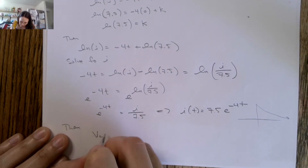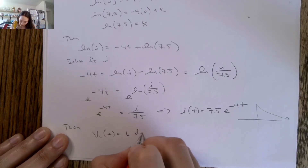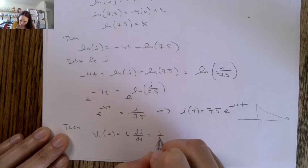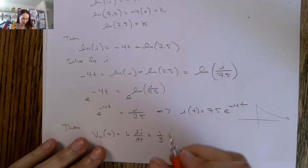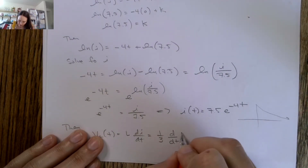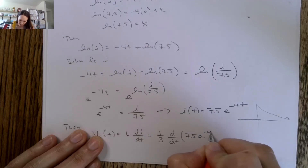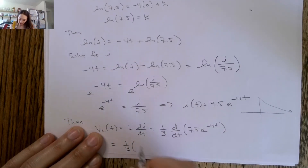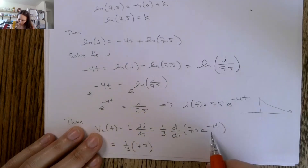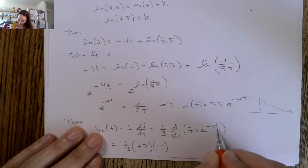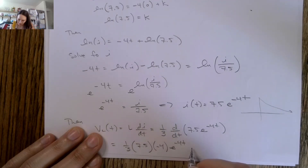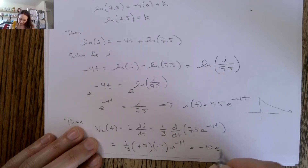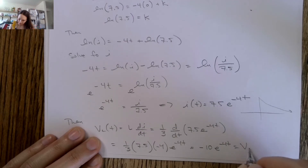VL(t) equals L dI/dt. Our inductor has a value of one-third Henry, so: one-third times the derivative with respect to time of 7.5 e to the negative four t. Bringing the 7.5 out: one-third times 7.5 times the derivative of e to the negative four t. Taking the derivative of the inside gives negative four, times e to the negative four t. This works out to be negative ten e to the negative four t. That's VL(t).